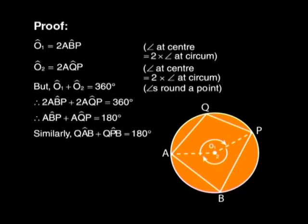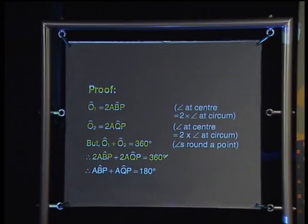The construction should have reminded you about the angle at the center being double the angle at the circumference. So O1 equals twice ABP and O2 equals twice AQP. Did you notice that O1 and O2 add up to 360 degrees? That means twice ABP plus twice AQP also adds up to 360 degrees. Halve both sides of the equation and you get ABP plus AQP equals 180 degrees. And this completes the proof.